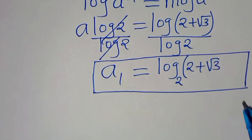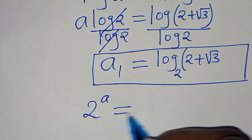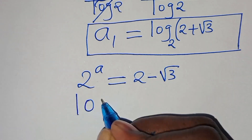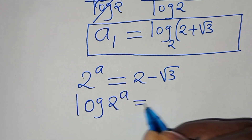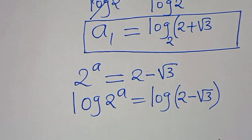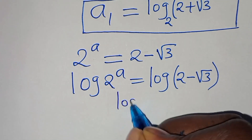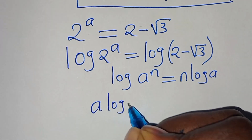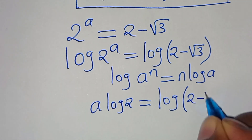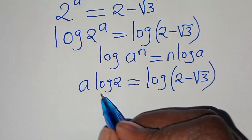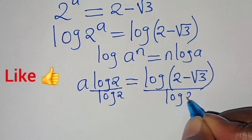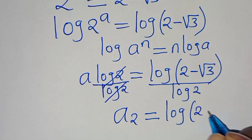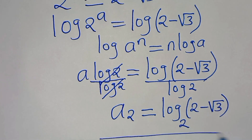This is the value of A1. We can solve for the value of A2: we have 2 to the power of A equal to x2, and x2 is 2 minus square root of 3. Let's introduce logarithm again on both sides, so that we have log of 2 to the power of A equal to log of 2 minus square root of 3. Dividing both sides by log 2, A2 is equal to log base 2 of (2 minus square root of 3).